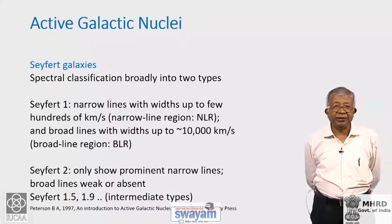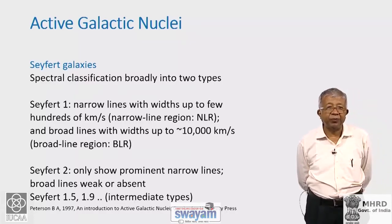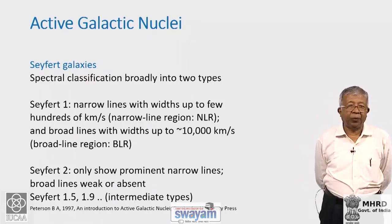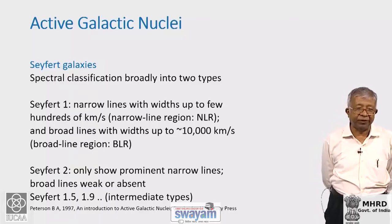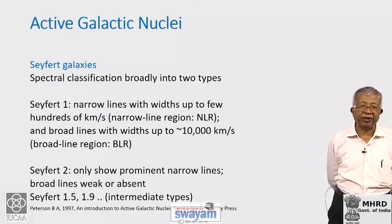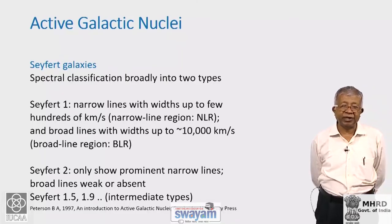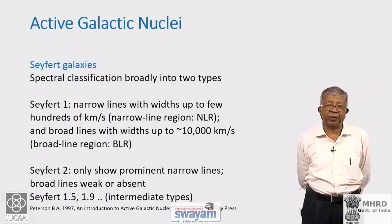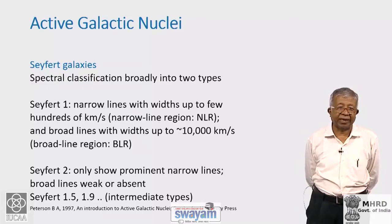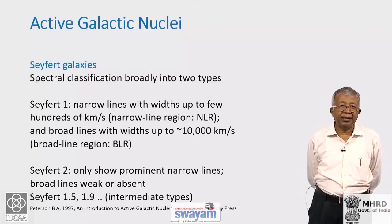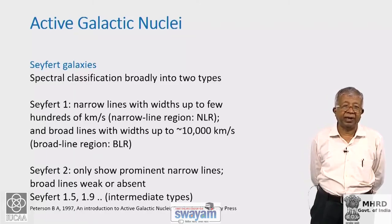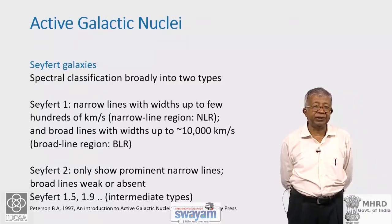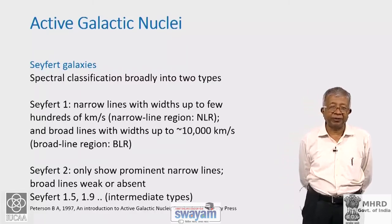So we have spiral galaxies with emission lines and a semi-stellar nucleus — the first indication that we are looking at something very different. When detailed spectral studies of Seyfert galaxies were made, they could be categorized into two broad types. Seyfert 1 objects have narrow lines with widths up to a few hundred kilometers per second — the narrow line region — as well as broad lines corresponding to velocities of up to ten thousand kilometers per second — the broad line region. Seyfert 2 galaxies show only the prominent narrow lines; broad lines are weak or absent. With higher resolution spectra, subcategories 1.2, 1.5, and 1.9 have been classified as intermediate types.